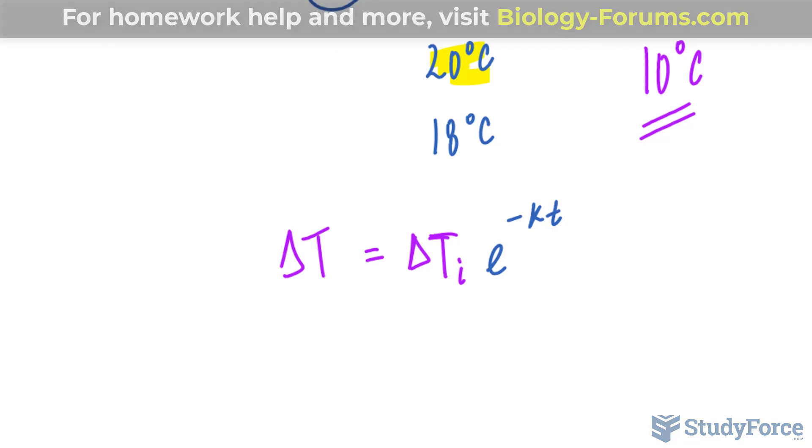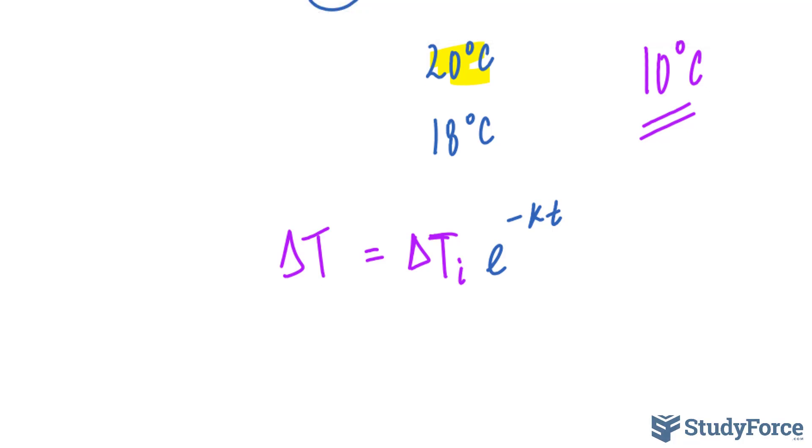So what I will do is substitute values that I already know. I know that initially, the difference between the tea and the coffee is 20 degrees. And for simplicity's sake, I will not include the units in the calculation. Multiply to E raised to the power of negative K, which we do not have, multiply to the time that it took the coffee and tea to become 18 degrees Celsius. And I said earlier that it was two minutes.